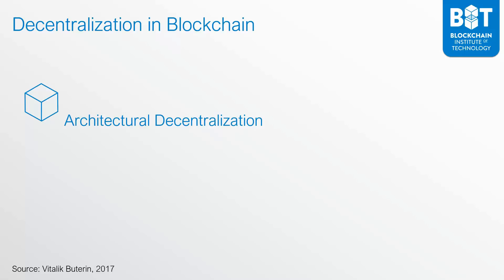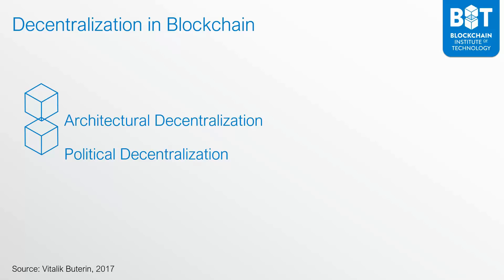According to Vitalik Buterin, co-founder of Ethereum, the next type of decentralization is political decentralization. When you look at political decentralization in the context of Bitcoin, for example, Bitcoin is also politically decentralized because there is no CEO of Bitcoin that sets the rules. All these different computers all around the world are running the Bitcoin protocol, but there is no CEO that actually runs and controls all those computers. So Bitcoin is not only architecturally decentralized because it runs on multiple computers — it is also politically decentralized because there's no CEO or controller on top that tells the Bitcoin network what to do.